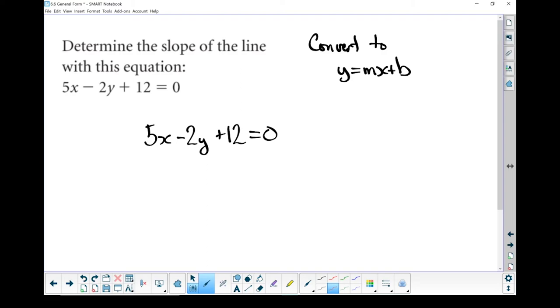Now, right now, I've got a negative on that y, so I'm just going to swap it over to the other side, so I'm going to add 2y to both sides. 5x plus 12 equals 2y. I can flip that around. 2y equals 5x plus 12.